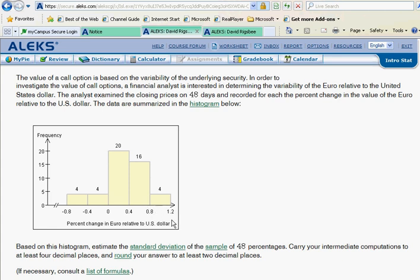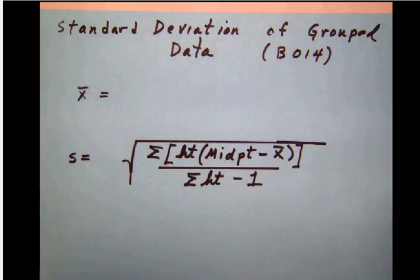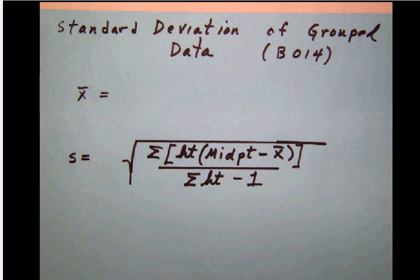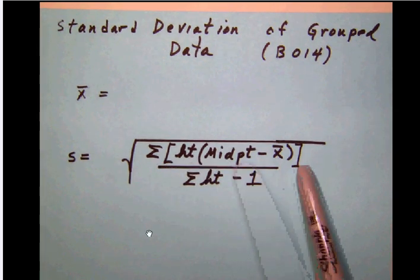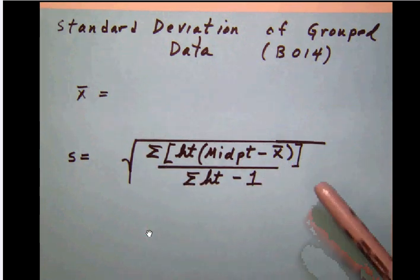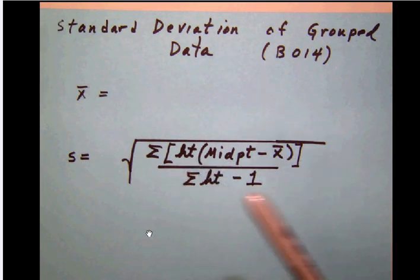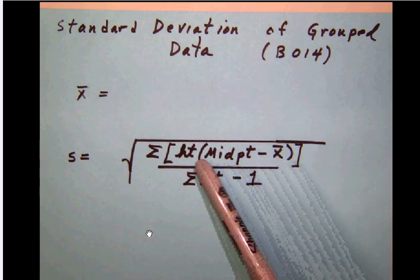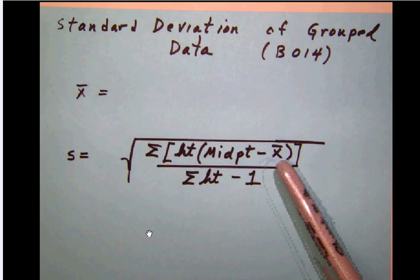Let's take a quick look at our formula to solve this problem. The standard deviation of grouped data formula is complicated — we're going to have a big square root at the top of a fraction, within which we have a summation. Each time we take the height of a bar and multiply it by a quantity that includes the midpoint of each bar, then subtract the average.